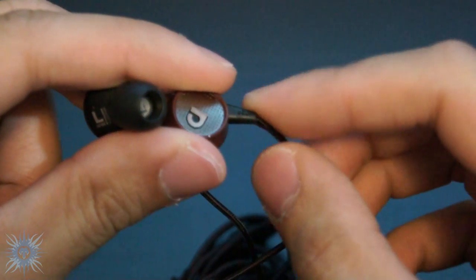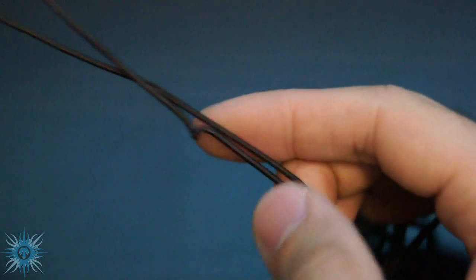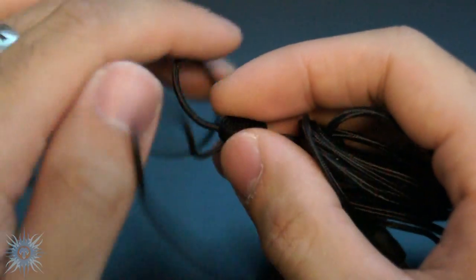Moving down the earbud, there's adequate strain reliefs, and as I touched on before, the braided cord is Kevlar reinforced and has a Cordura brand nylon outer shell for added durability.